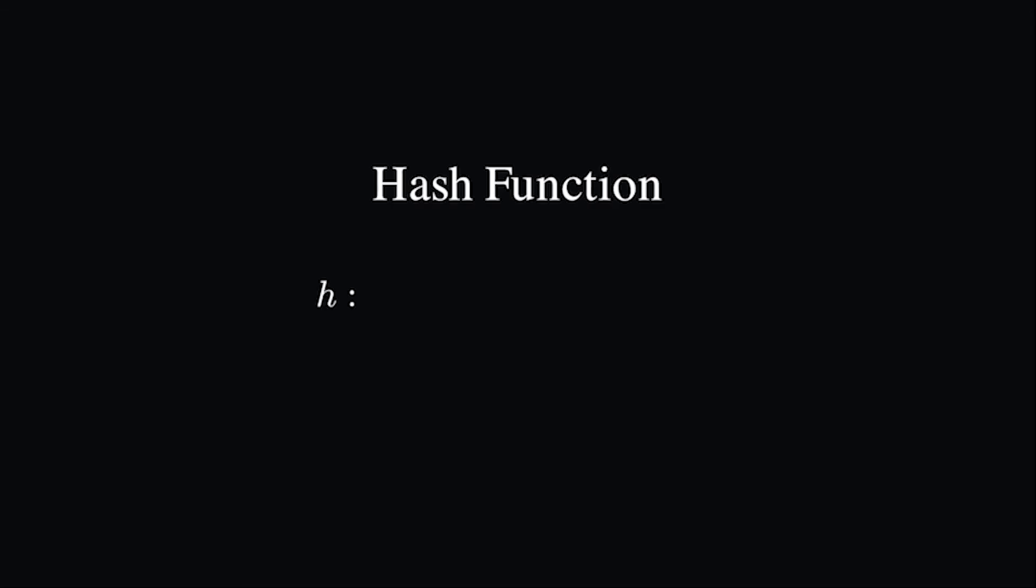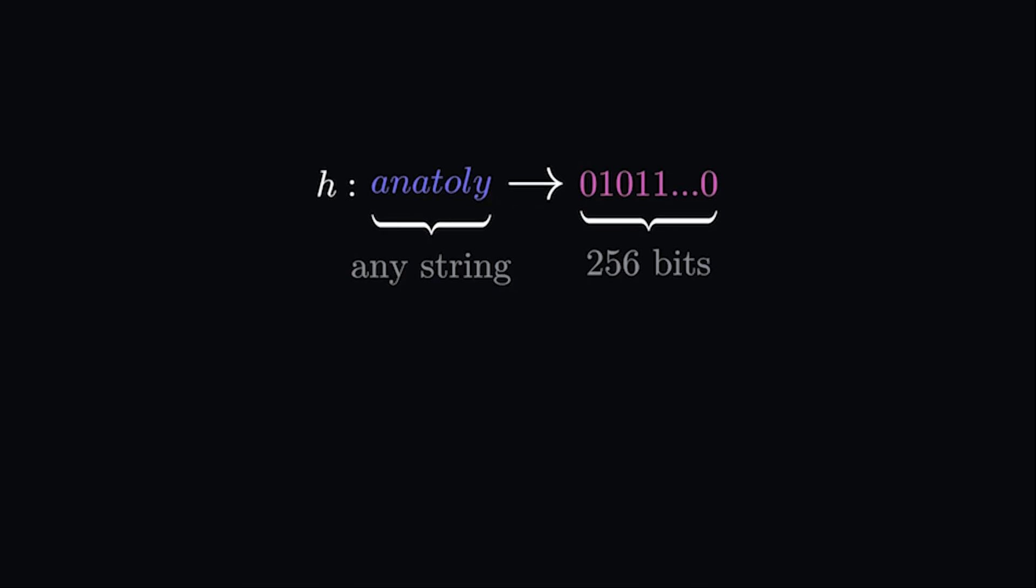To explain proof of history, we'll start with a quick overview of hash functions. A hash function maps any piece of data to a fixed size output. For example, under the SHA-256 hash function, the hash of Anatoly will be some sequence of zeros and ones of length 256.